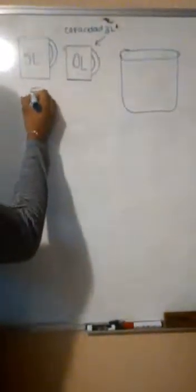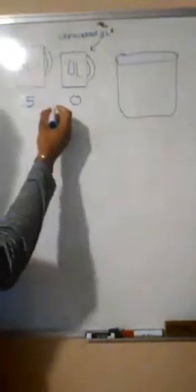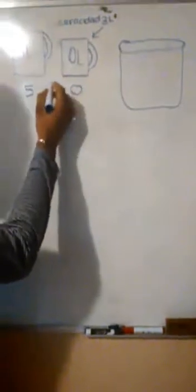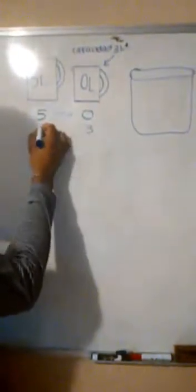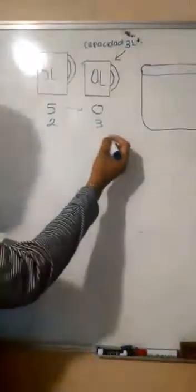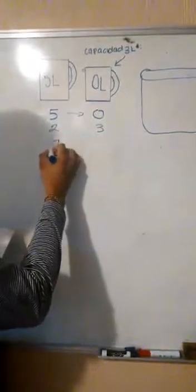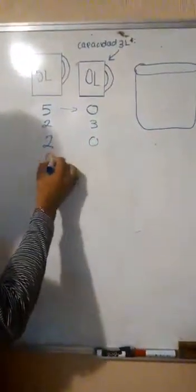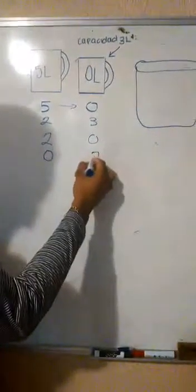¿Qué es la jarra de 5 litros? Y 0 litros. La jarra con capacidad de 5 litros pasaría los 2 litros restantes, lo cual le quedaría 0 litros aquí y 2 litros acá.